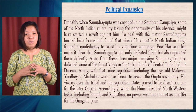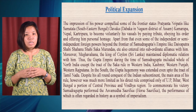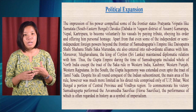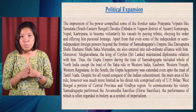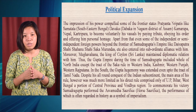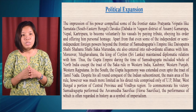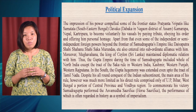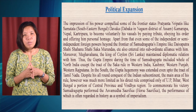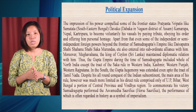Samudragupta also overpowered some independent or semi-independent foreign powers beyond his frontier, such as the Daivaputra Shahi, Shahanush Shahi, and Saka Murandas. The king of Ceylon maintained diplomatic relationships, and the kings of Nepal and Punjab also gave tribute to the Gupta ruler. His hegemony reached up to the tract of Tamil Nadu. Despite all these conquests, the main area of direct rule was limited to UP, Bihar, West Bengal, and parts of central province and the Vindhya region. To commemorate his victory, Samudragupta performed the Ashwamedha sacrifice, regarded in history as a symbol of imperialism.